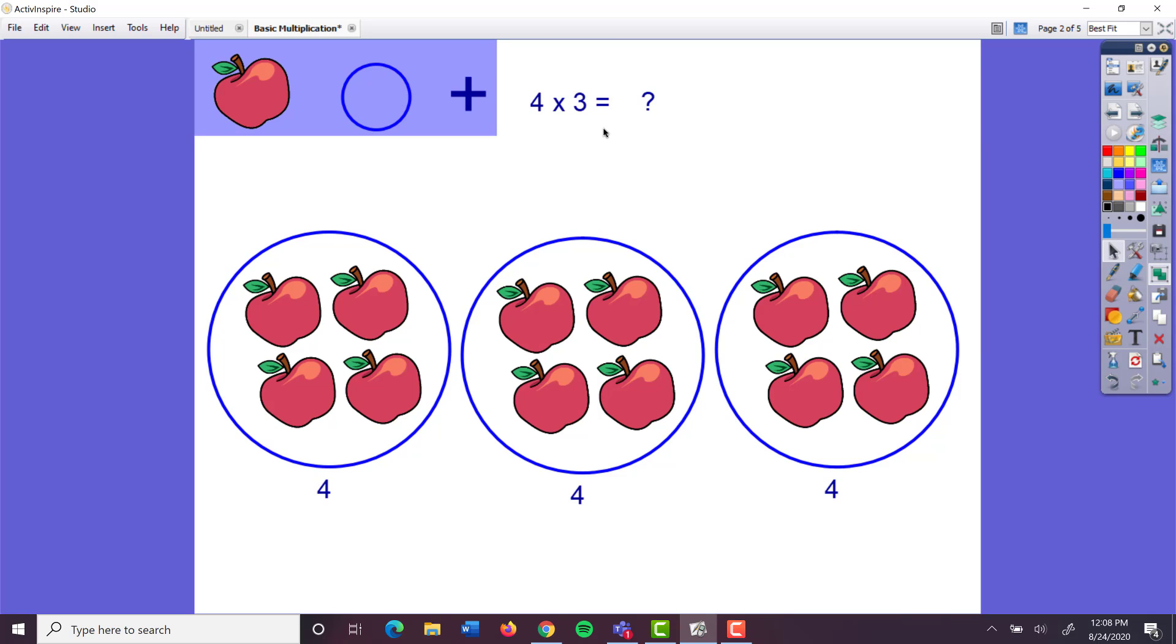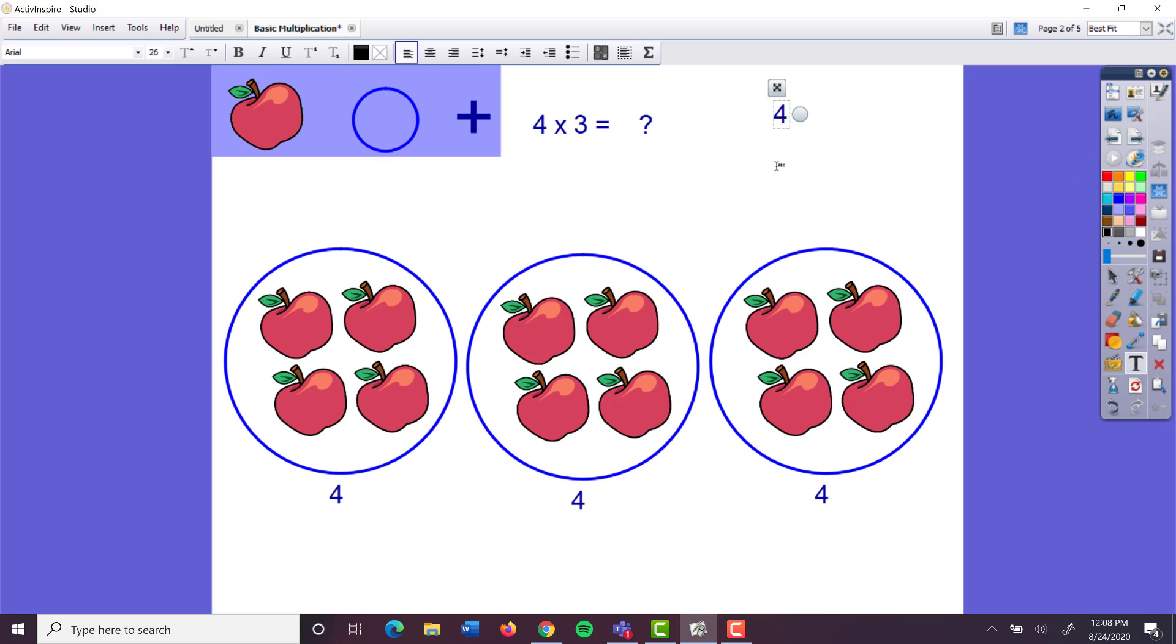I have to add the number four three times. Four, there's one, two, three. And if I add those up, I'll still get the same answer. I'll still get twelve. Either way, I'm going to come up with twelve. Hope this helps with multiplication.